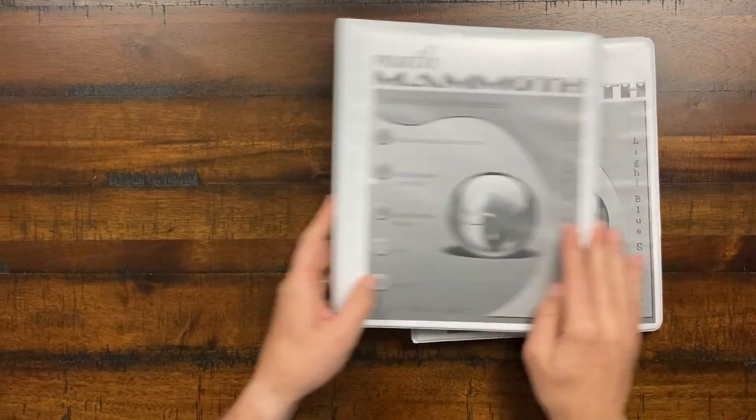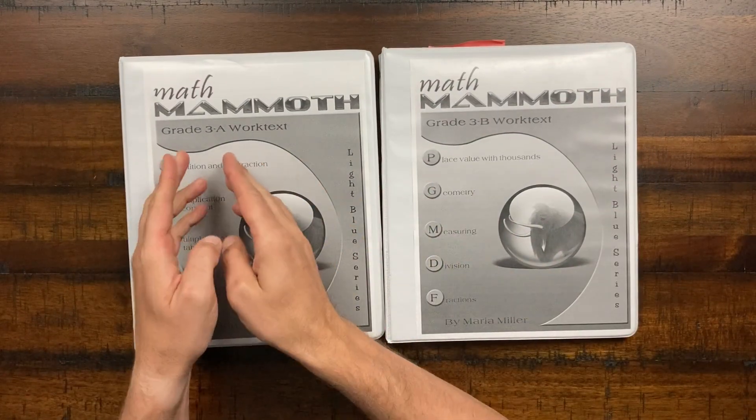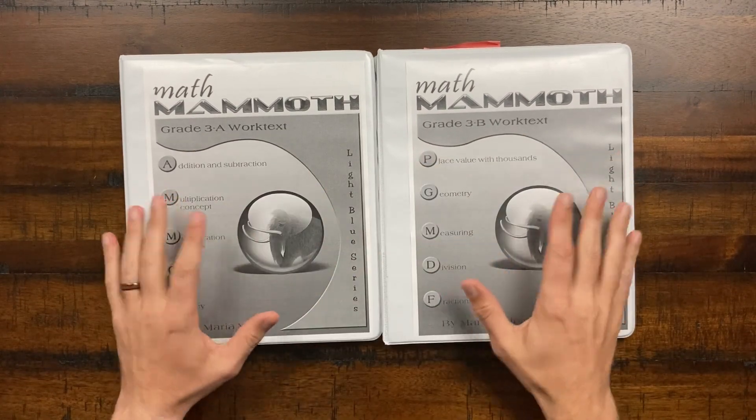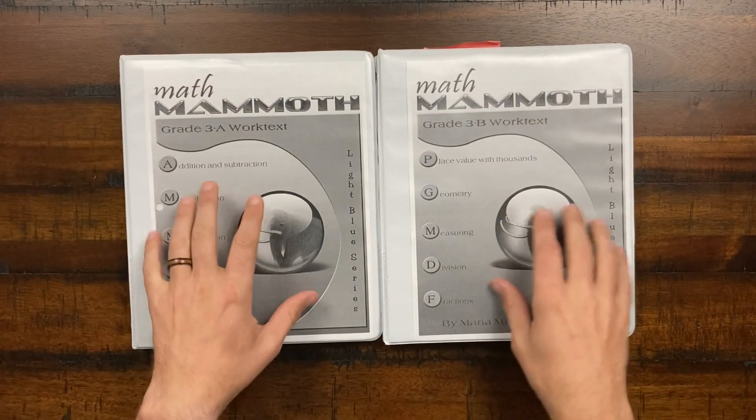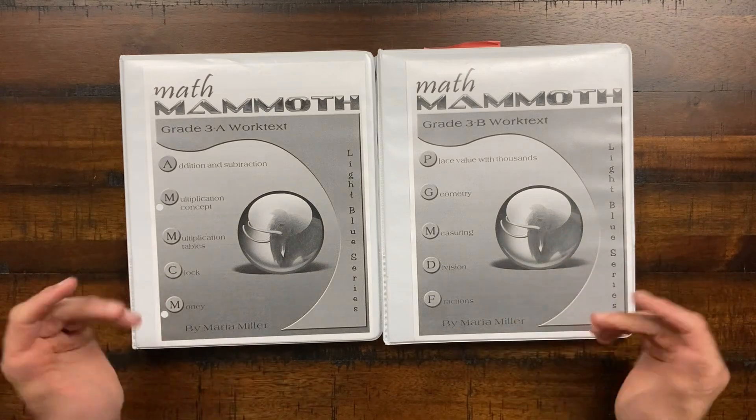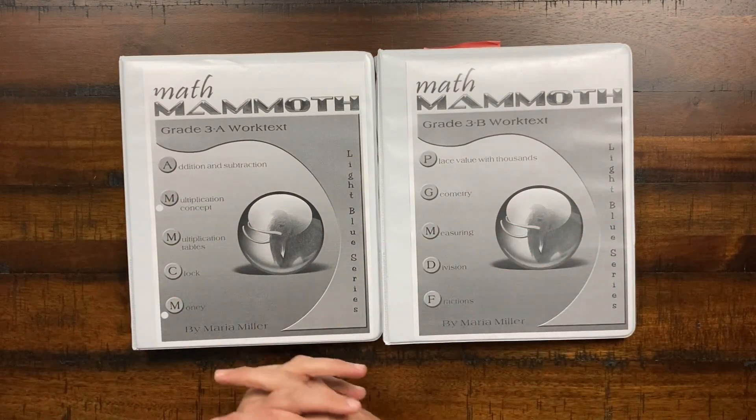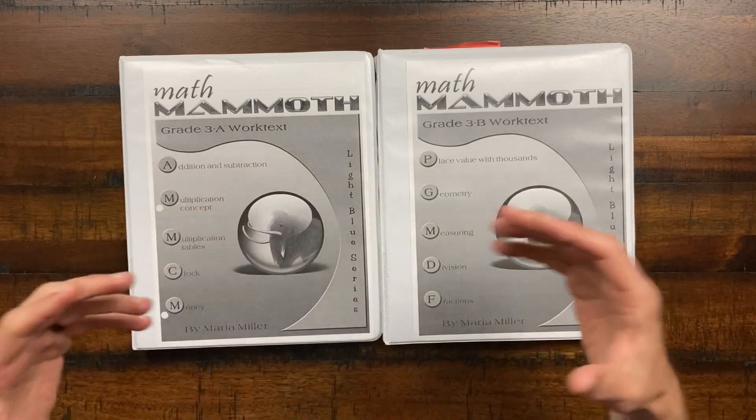So here we go. We've got two workbooks, the grade three A workbook and the grade three B workbook. Obviously I print off these curriculums, print the front pages, put them into the binder, and I use those.